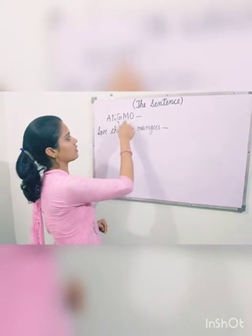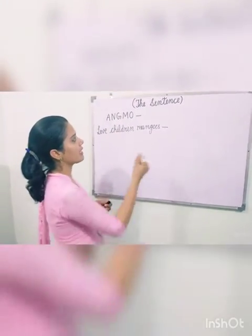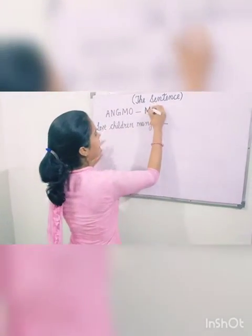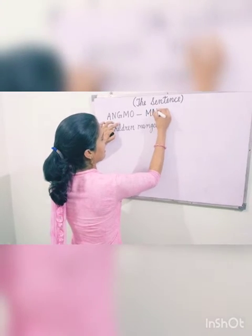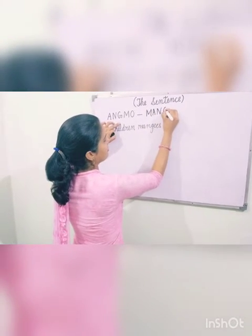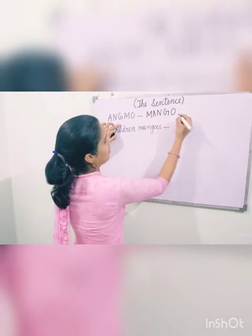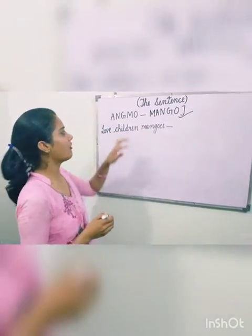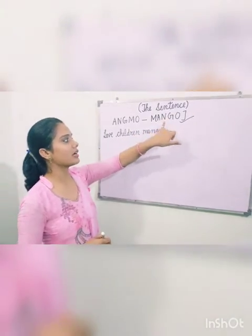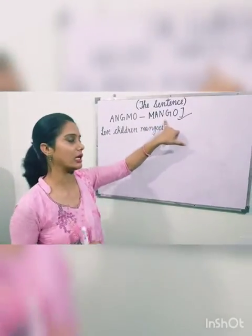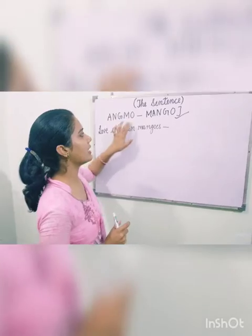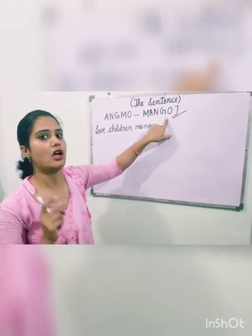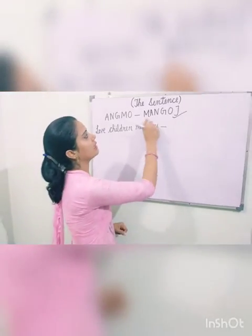Now, rearrange it. In letters ko haam re-arrange karen ga. You can try. M, A, N, G, O — mango! After re-arranging, we can find a correct word which gives a meaning. In letters ko re-arrange karene ke baad, humara jo word nikla hai, uska ek exact meaning nikar raha hai — mango.